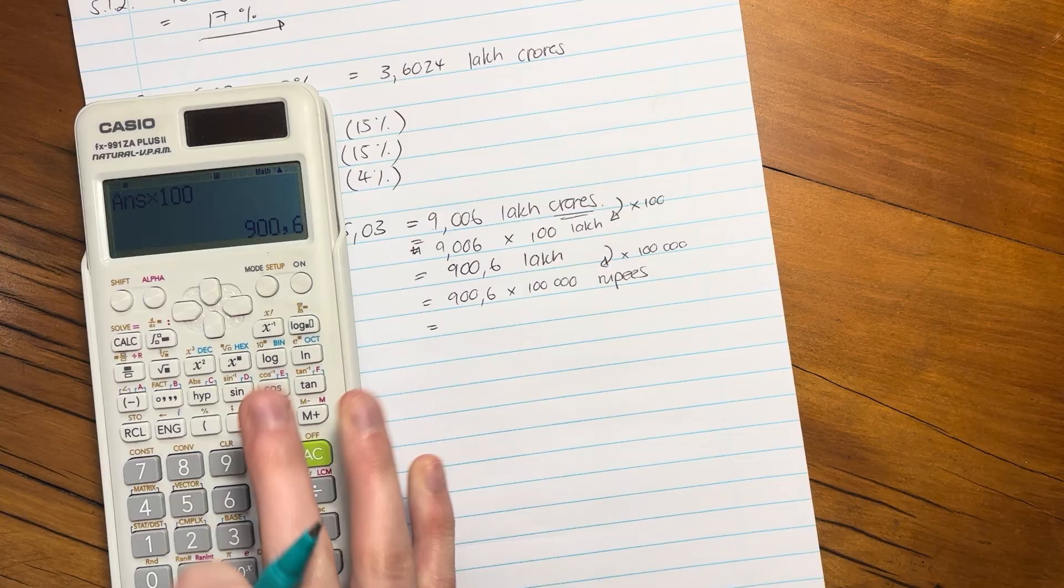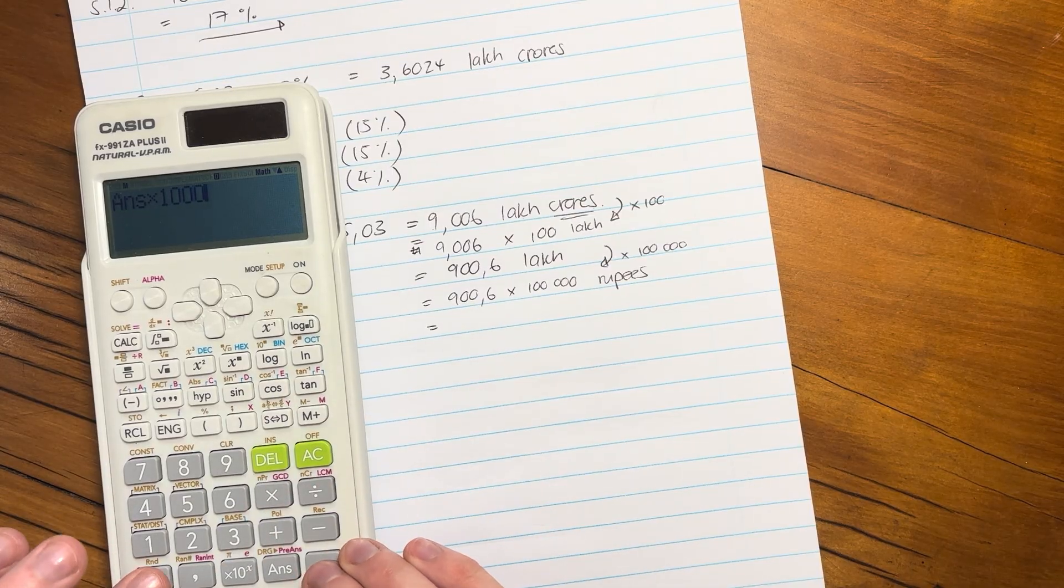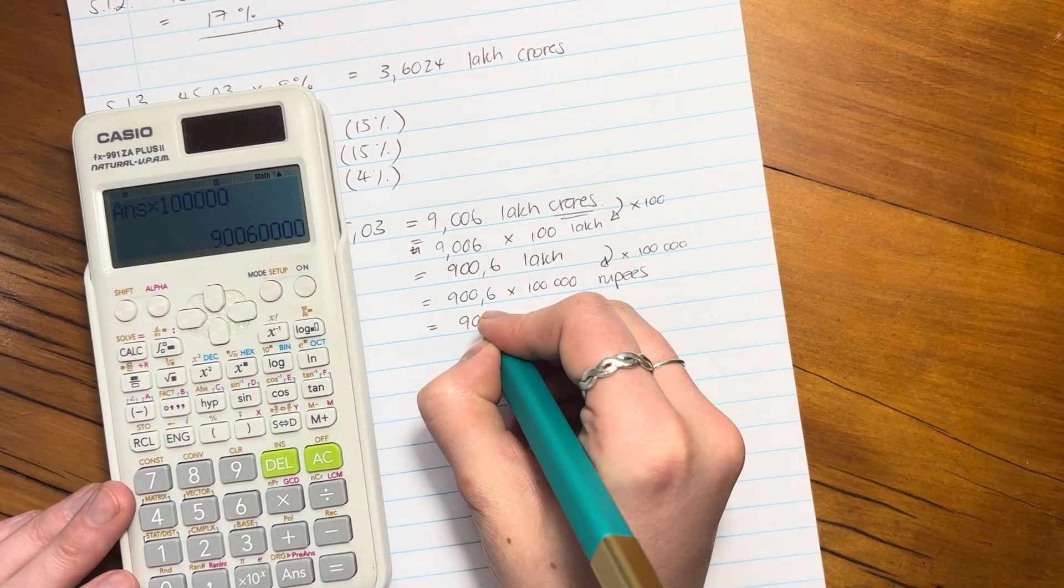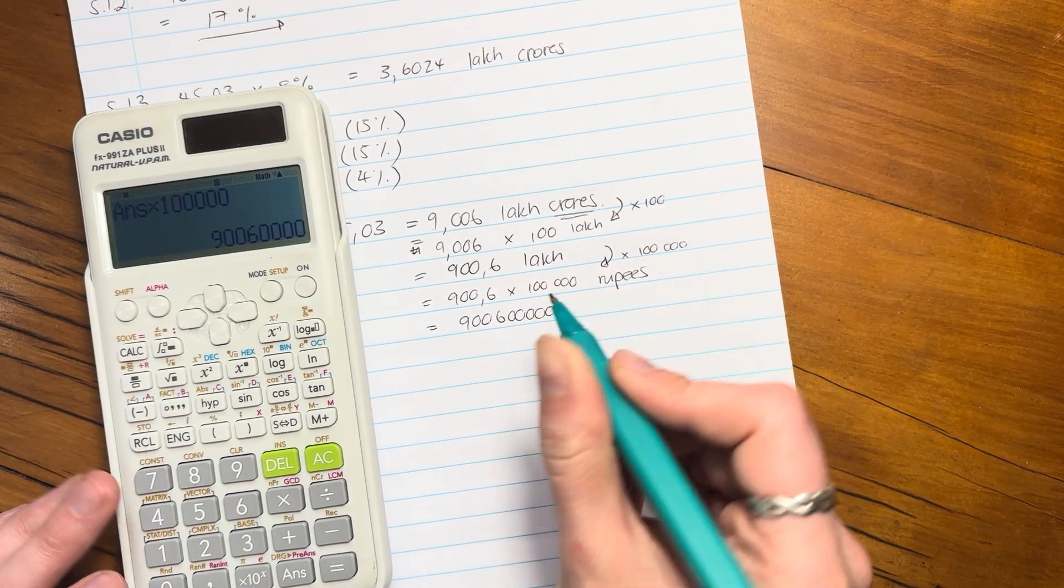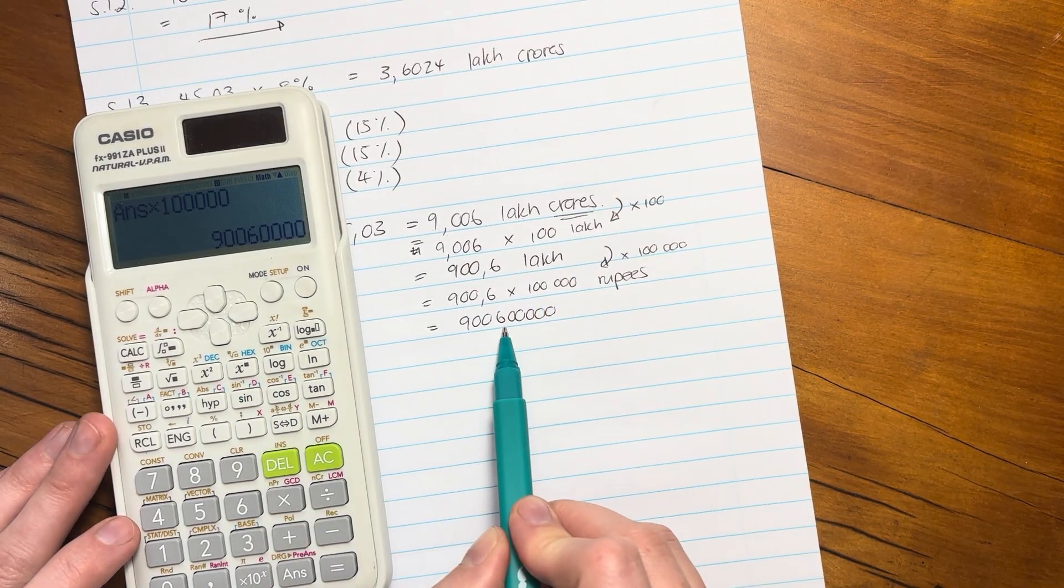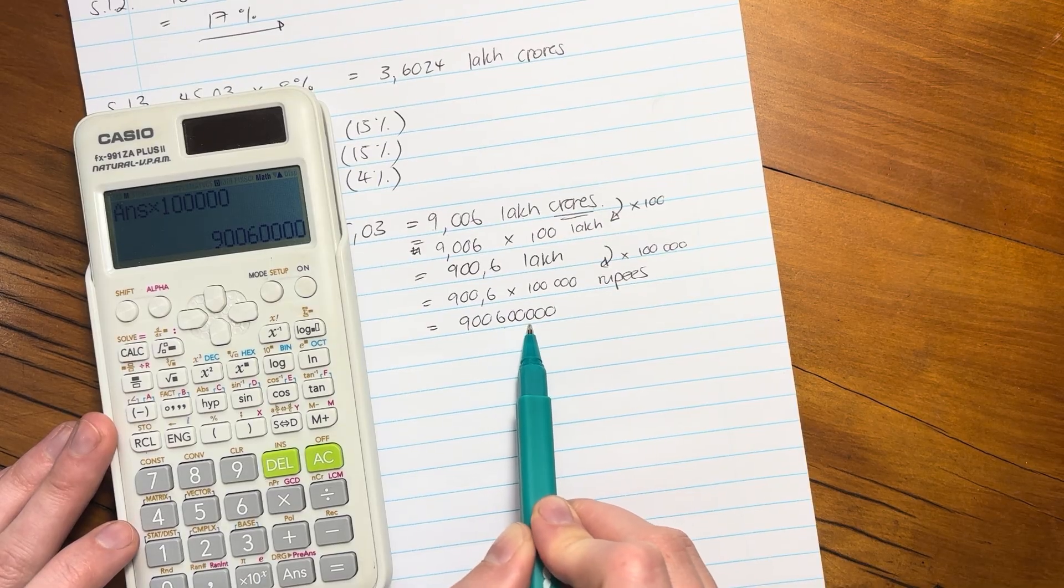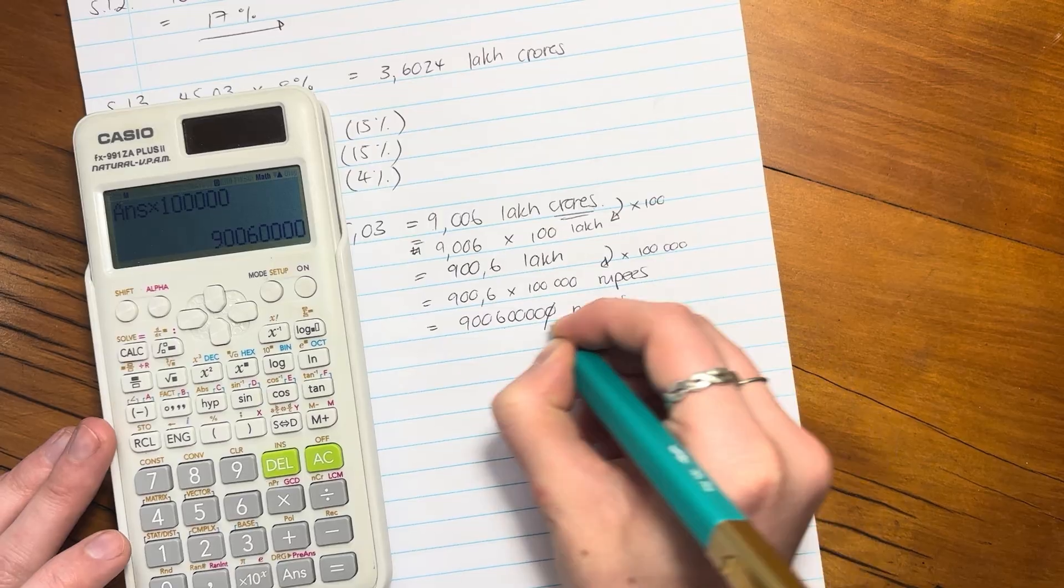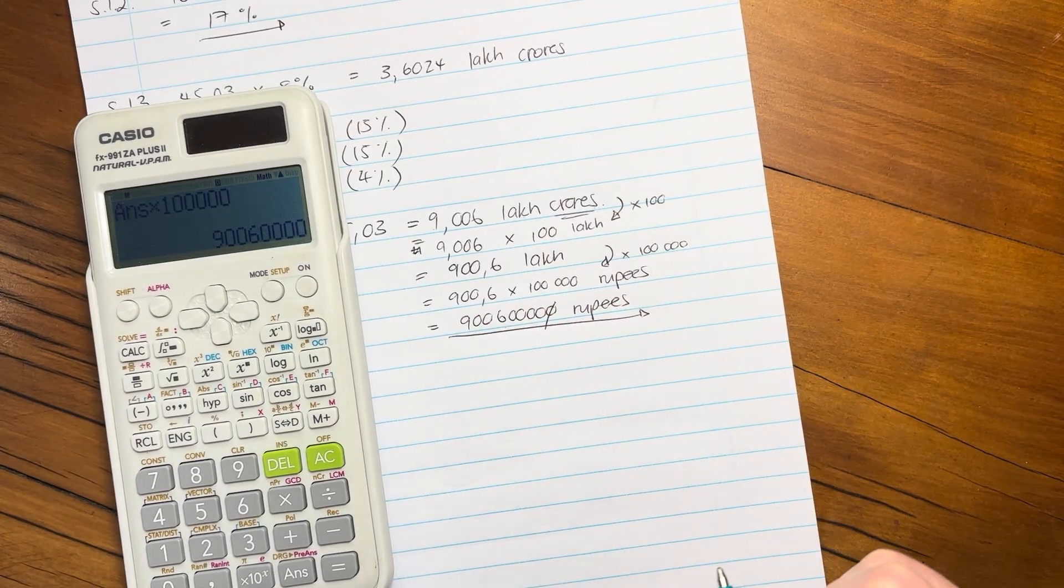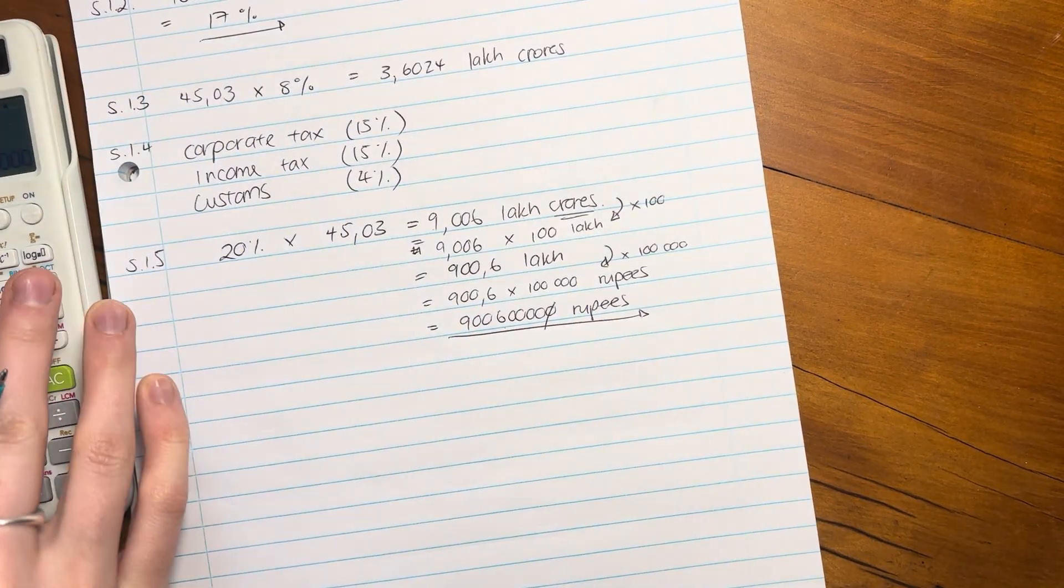Well, how many rupees are in 1 lakh? Well, it's 100,000. So now we actually have to times this by 100,000 to get it into rupees. So do you see how we're doing all these conversions? And that would then be in rupees. Let's times this by 100,000. Make sure you get the right number of zeros in there. 900,612,345 rupees. So that's the answer actually in rupees.